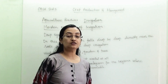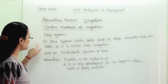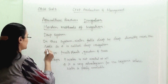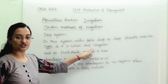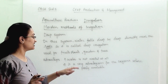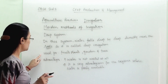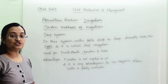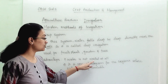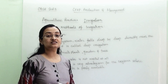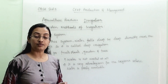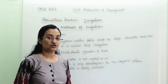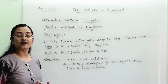The second modern method is drip irrigation. In this system, water falls drop by drop directly near the roots, which is why it is known as drip irrigation. It is used for fruit plants, gardens, and trees. The main advantage is that water is not wasted at all. It is a very beneficial method especially where water is poorly available or water scarcity exists, making it one of the most advantageous methods of irrigation.